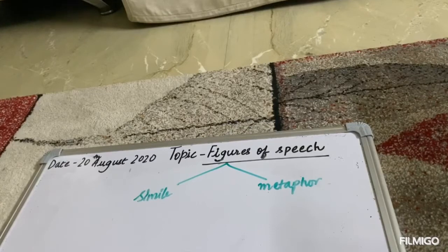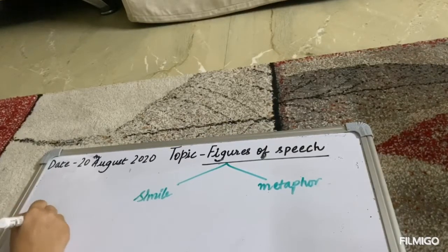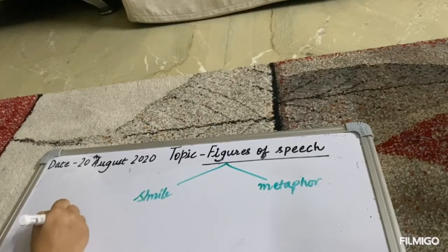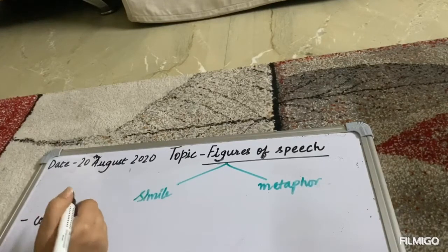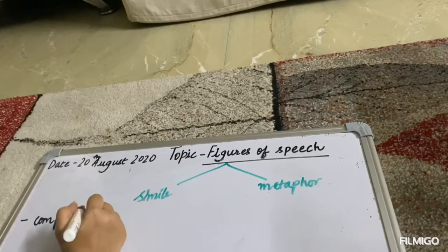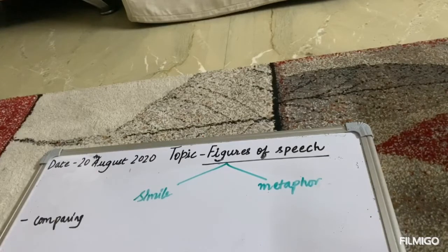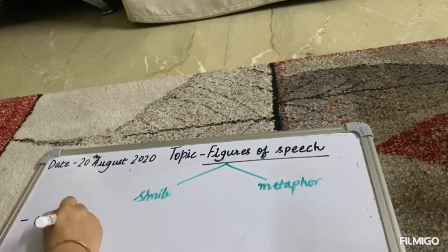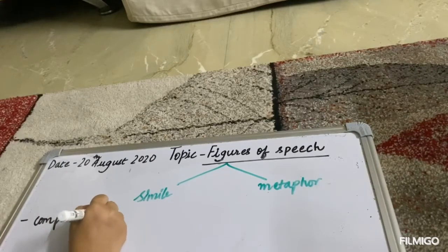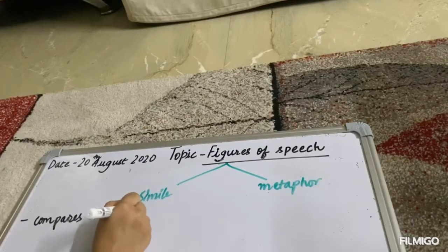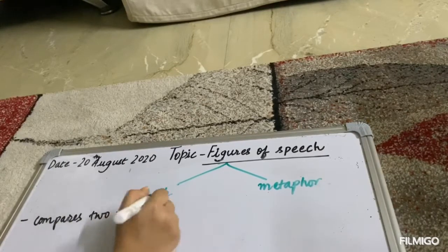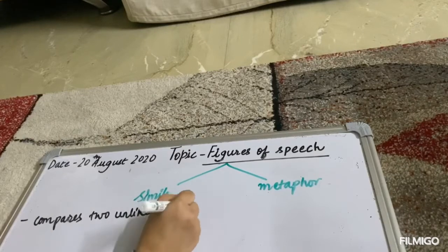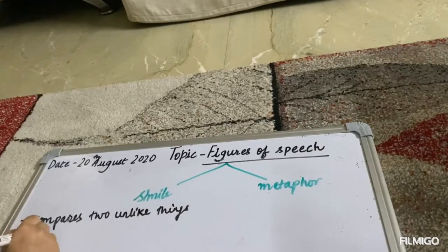A simile compares two unlike things using the words 'like' or 'as'. A simile compares two unlike things using the words 'like' or 'as'.